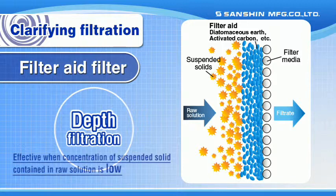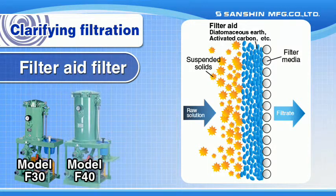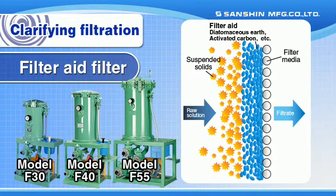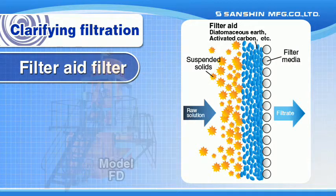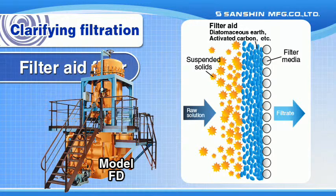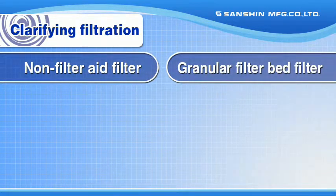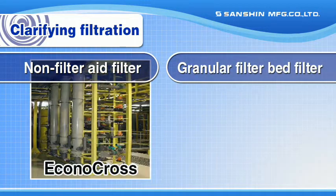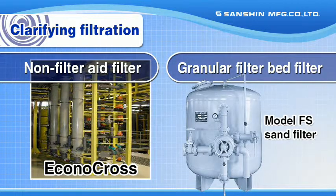Clarifying filtration is categorized into different types of filters. Filter aid filters use a filter aid to reduce filtration resistance and prevent filter media clogging, such as the model F30, F40, and F55 filters, as well as the model FD filter, ideal for fully automatic applications. In addition, there are also non-filter aid filters such as the MF series using a high-clarity membrane module, and granular filter bed filters such as the model FS sand filter.